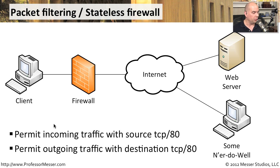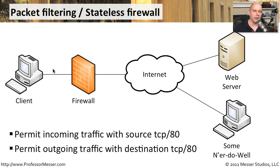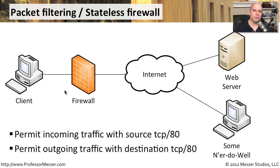You might set up a rule that said permit some incoming traffic with a source port of TCP 80. And so all traffic that was TCP 80, whether it was part of an existing flow, an existing session, or otherwise, would simply pass right through the firewall. We might have another rule that says permit outgoing traffic with the destination of TCP port 80, and then all traffic would pass through the firewall as long as the TCP port, as part of the packet, had port 80 associated with it.